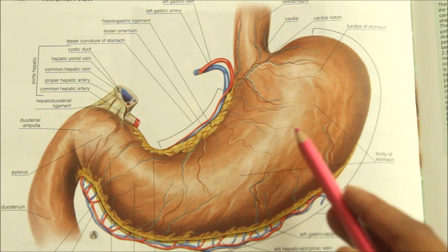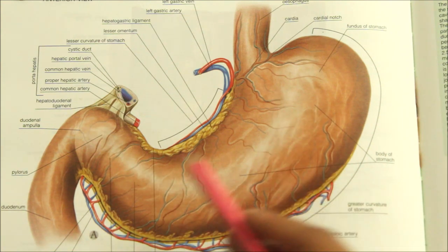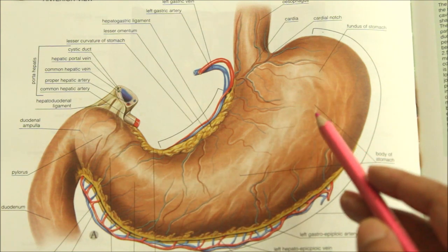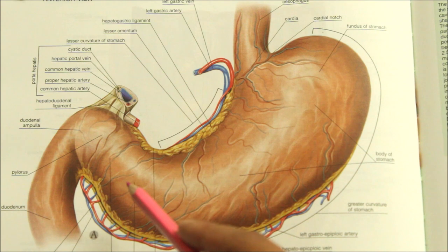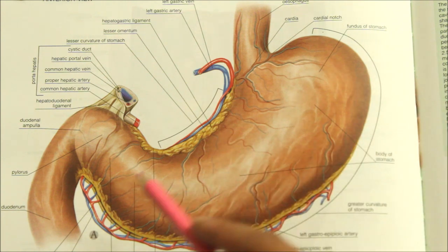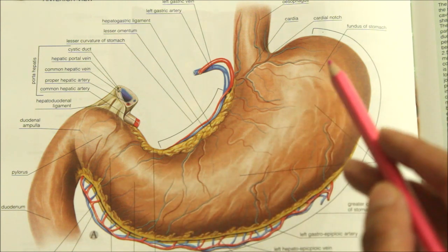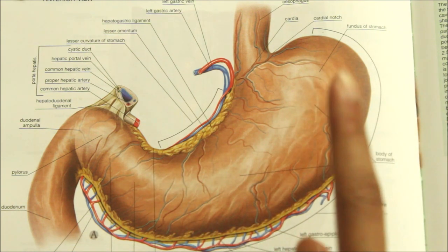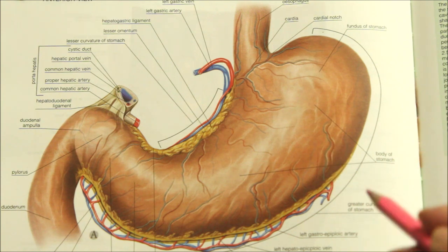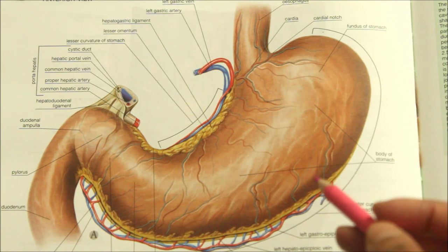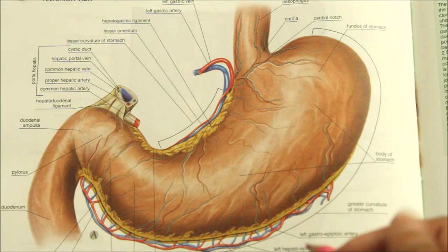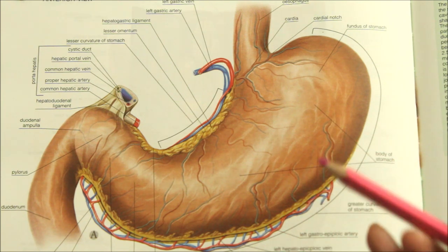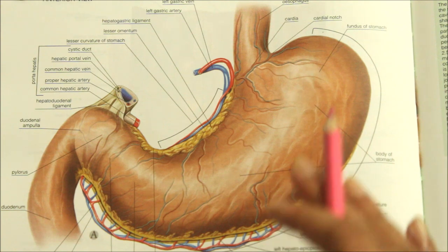The stomach is a very distensible organ. It is about 25 centimeters long. The mean capacity is 1 ounce — that is 30 milliliters — at birth, 1 liter at puberty, and 1.5 to 2 liters or more in adults.